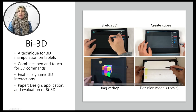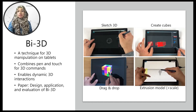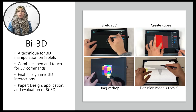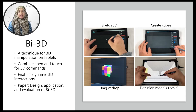Bi-3D is a novel interaction technique for 3D manipulation on tablets. It combines pen and touch gestures to form 3D commands. This can be useful in many scenarios, for example to sketch in 3D, to perform drag and drop in 3D, to rapidly create new geometric shapes, or for extrusion modeling of wireframe models. In this paper, we contribute the design, application, and evaluation of Bi-3D.